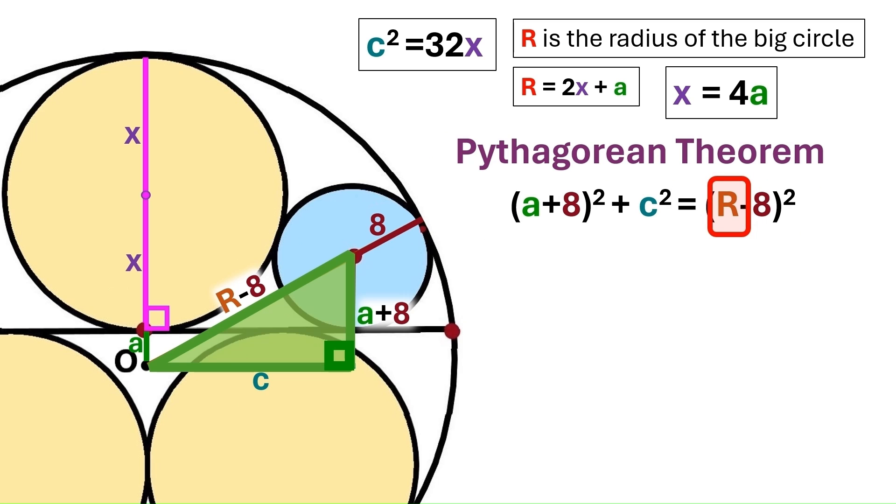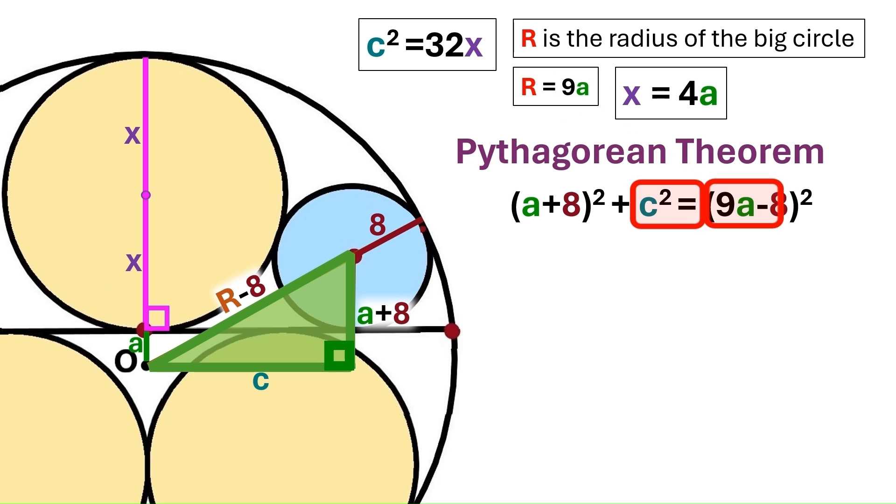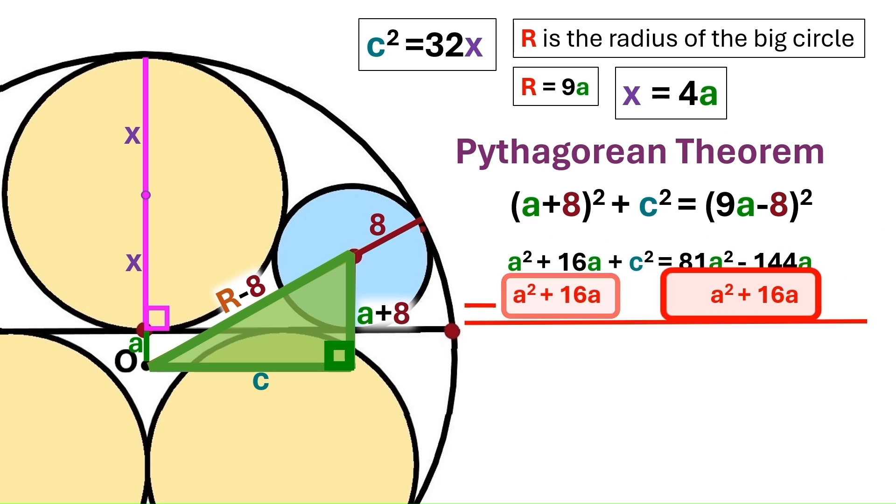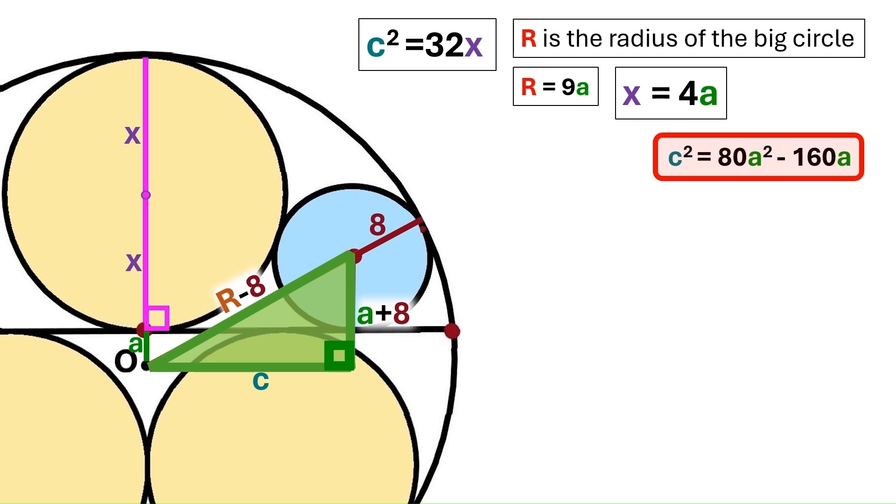So let's take the three sides of our right triangle and combine them into this equation. Now I want to express this capital R in terms of a. We know capital R equals 2x plus a. And we can also get rid of this 2x, because we know x is 4a. So 2x is basically 8a. And capital R turns out to be 9a. So let's change this to 9a. Next, we open up these brackets and we get this. Let's cancel out these 64s and then subtract this from both sides. And we get this equation.